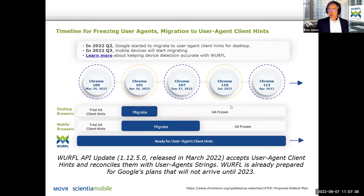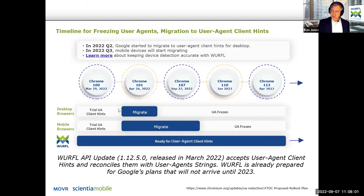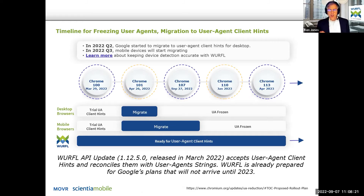In terms of where we are in the timeline, back at the beginning of 2022, Google put out a timeline showing the progression they would make on both desktop and mobile browsers to migrate. When they migrate from the user agent string to user agent client hints, it's not that they're getting rid of the user agent string — they're just freezing it where it is. From WURFL's device detection standpoint, we have already integrated user agent client hints into our technology.